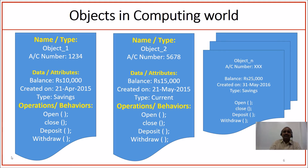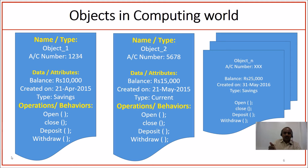Each of these objects can perform certain functions: opening an account, closing an account, depositing certain money onto the account, withdrawing money from the account. Object one is different from object two because they have a unique identifier called account number. Like this we have multiple objects. Exactly on the same analogy of what we experience in the physical world, we build the concept of objects in the software computing world.